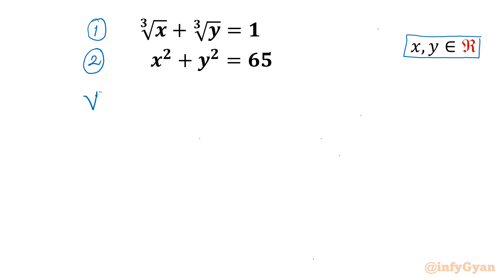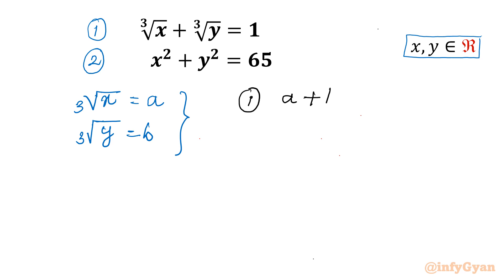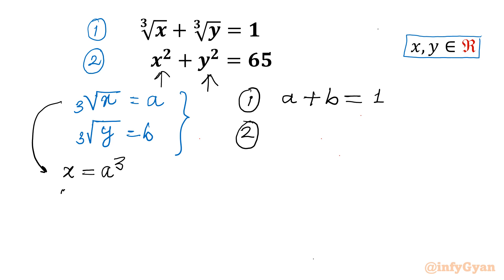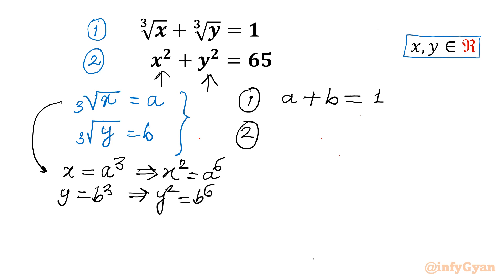I will use substitution. Let cube root of x equal to a, and cube root of y equal to b. After substitution, equation number 1 becomes a plus b equals 1. For equation number 2, x squared is required and y squared is required. Taking cubes: x equals a³ and y equals b³. So x² equals a⁶ and y² equals b⁶. The second equation becomes a⁶ plus b⁶ equals 65.